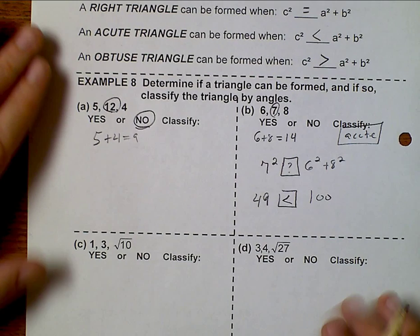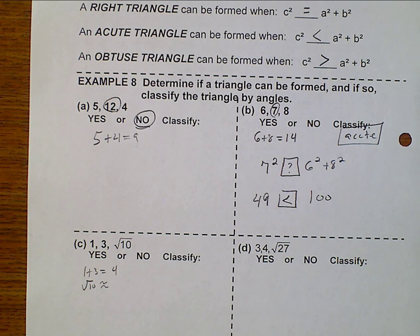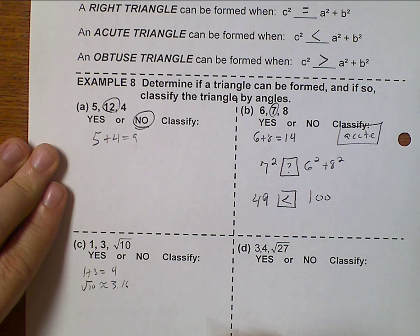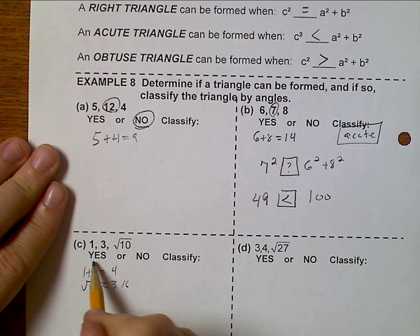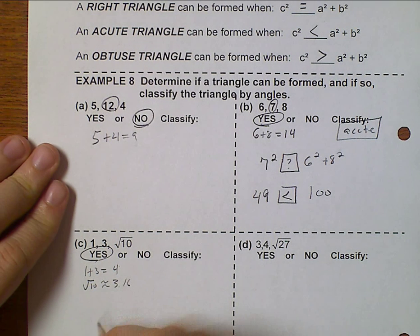Look at number 10. Well, 1 plus 3 is 4 and the square root of 10 is approximately 3.16. 4 is bigger, so yes, this is a triangle.